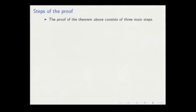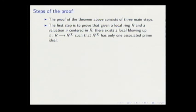A quick description of the steps. The proof consists of three main steps. The first step is to give one blowing up such that after this blowing up, this ring will have only one associated prime ideal. Essentially, because we are taking a point, there will be many irrelevant components. So we just blow up to eliminate these components.